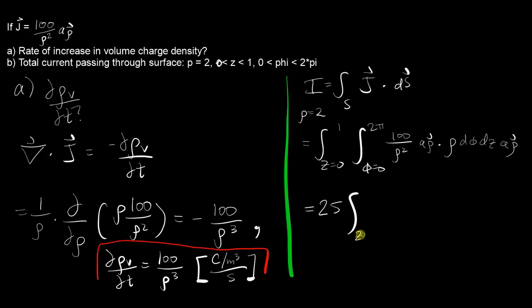Then we have z equals zero to one of just dz here, and then you have also the integral phi equals zero to two pi of just d_phi. So this ends up being 25 times z from one to zero times phi from two pi to zero.